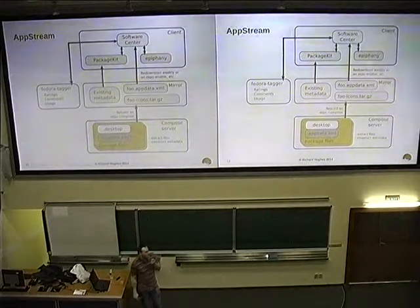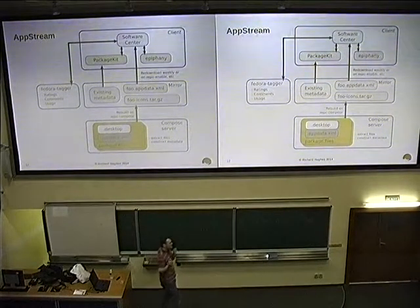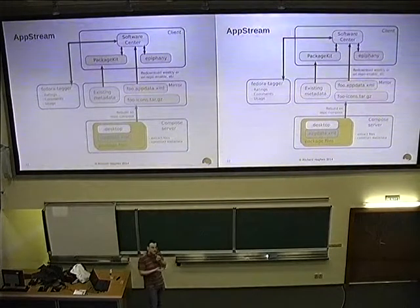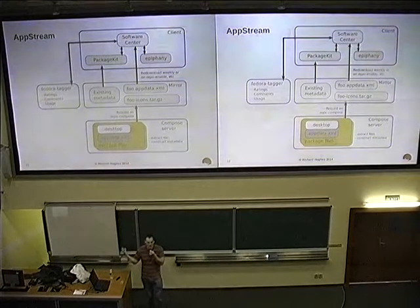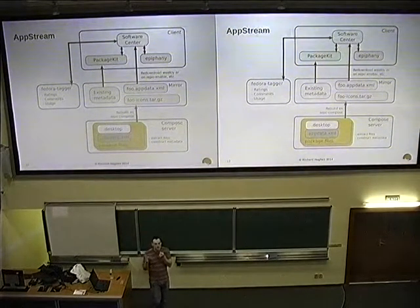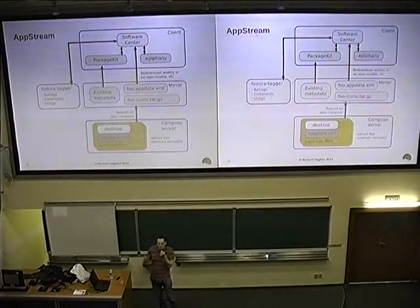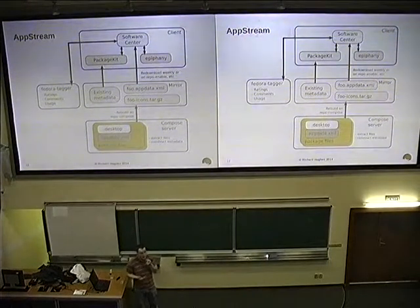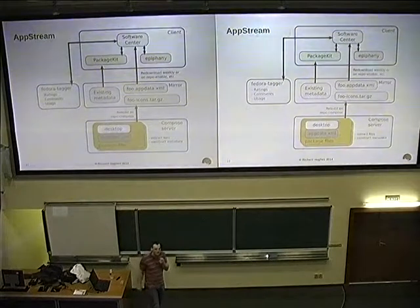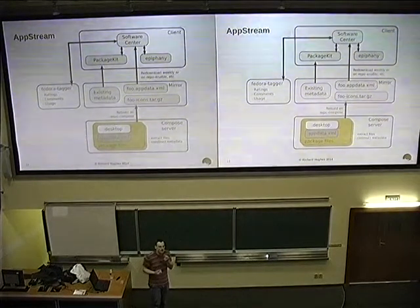I'm not a web app guy by a long shot. When we started AppStream with guys at SUSE and Ubuntu, the proposal was to use the Open Collaboration Server so ratings on one distro wouldn't bleed into another. For Fedora, FedoraTagger works really well — I don't see a problem with a private instance. The FedoraTagger integration in GNOME software is just one URL and a couple of methods, so it would be trivial to change that URL to something local.